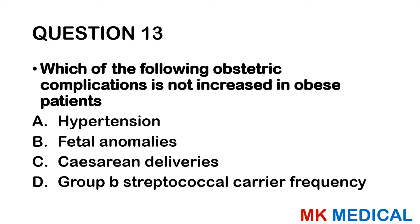Question 48: Infertility is seen in: A — fibroid uterus. B — endometriosis. C — adenomyosis. D — PID. E — all of the above. If you're sure about two or more options and there's an 'all of the above' choice, it's most likely correct. Infertility is caused by all of these conditions. The answer is E.